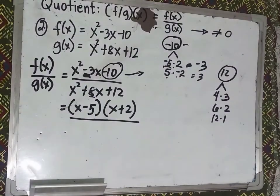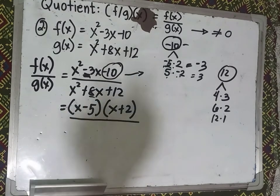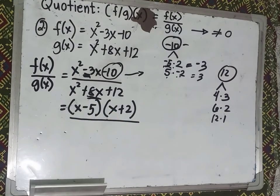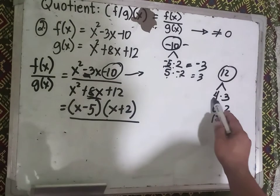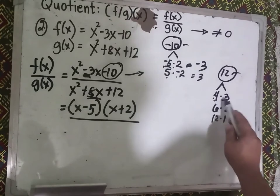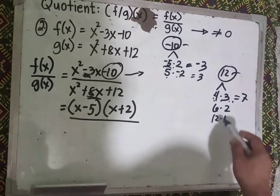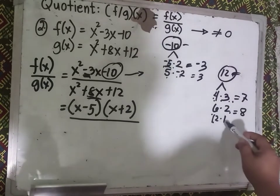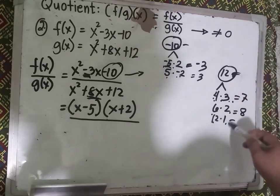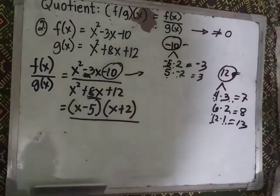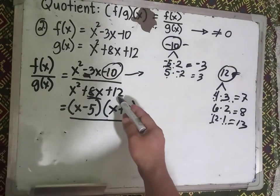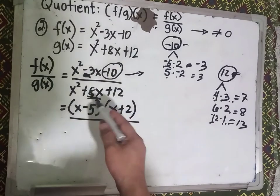Let's try: 4 times 3 = 12 and 4 + 3 = 7; 6 times 2 = 12 and 6 + 2 = 8 — that works! 12 times 1 = 12 but 12 + 1 = 13, so that's not it. The two numbers are 6 and 2, since they multiply to 12 and add to 8.